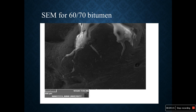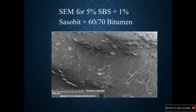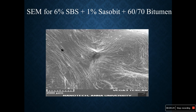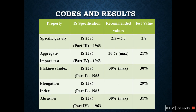This is the laboratory instrument. This is the SEM image for 60/70 bitumen. This is the SEM for 5% SBS plus 1% Sasobit plus 60/70 bitumen, and this is the SEM for 6% SBS plus 1% Sasobit plus 60/70 bitumen. The results have been given and all test values have been made permissible within the recommended limits.